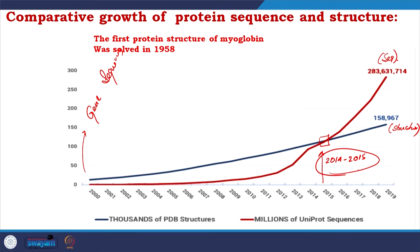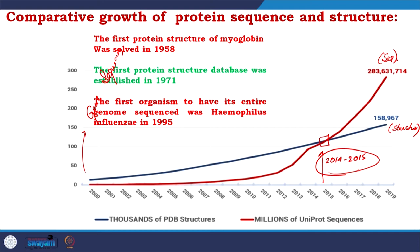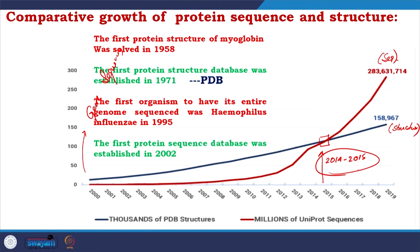The first protein structure of myoglobin was solved in 1958. The first protein structure database, PDB, was established in 1971. The first organism to have its entire genome sequenced was Haemophilus influenzae in 1995. The first protein sequence database was established in 2002. PDB is the protein structure database and UniProt is the protein sequence database — I will discuss both databases, taking a glimpse to help you understand their roles.